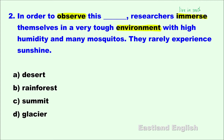Observe means watch carefully over time. Immerse is a verb that equals living in completely. Environment includes everything around you. Let's begin with the keyword high humidity. Humidity is the amount of moisture in the air — high humidity means a lot of moisture, so we can delete choice A, desert, because a desert has no rain. Mosquitoes love hot, wet environments, so glacier is not correct — it's too cold for mosquitoes. That leaves us with two choices. The last clue, they rarely experience sunshine, helps us delete summit, because a mountaintop is a place where you experience a lot of sunshine.